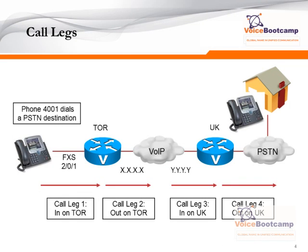Call legs basically allow a hop that a router establishes a call between endpoints. Here you have two routers and two IP phones. For every step of the call, there are call legs involved. Think about call legs as like a session. As an IP phone, you pick up the handset, you dial a number, the signal comes into the router — that is considered to be one call leg.